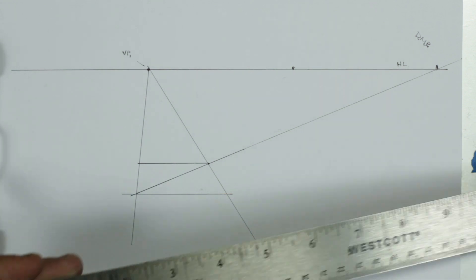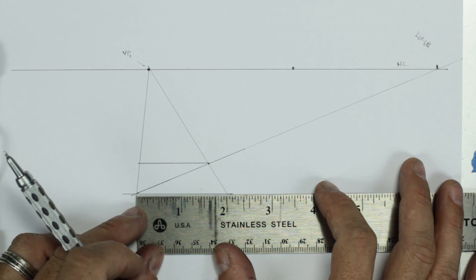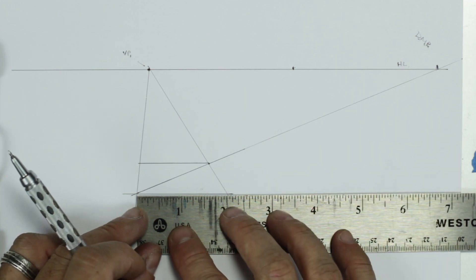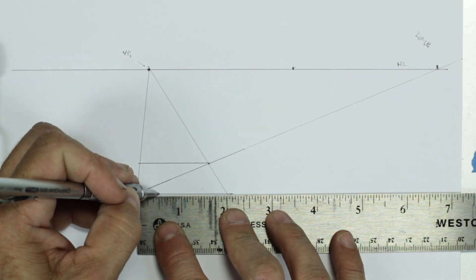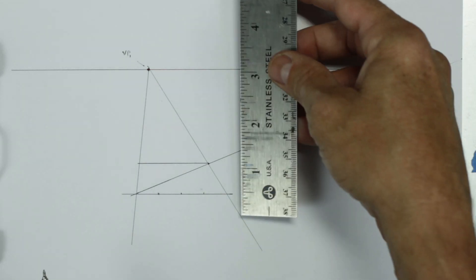So now what I'm going to do is I'm going to take the length of this forward edge, which is two inches. And actually, while I'm here, I'm going to do one more thing. I'm going to measure out half-inch increments along this edge. So it's two inches.